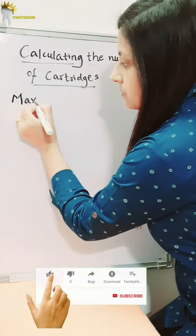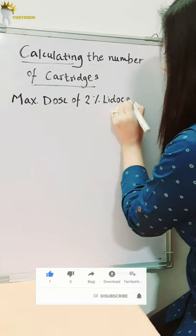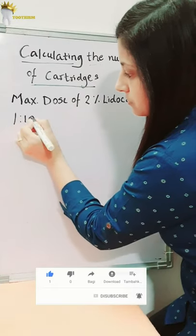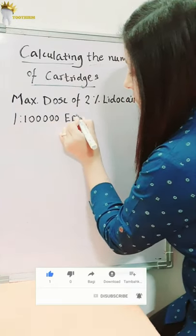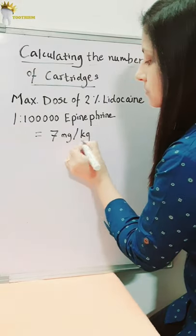How many cartridges of 2% lidocaine with 1:100,000 epinephrine can be administered to a man weighing 70 kg? The maximum dose of 2% lidocaine with epinephrine for an adult is 7 mg per kilogram.